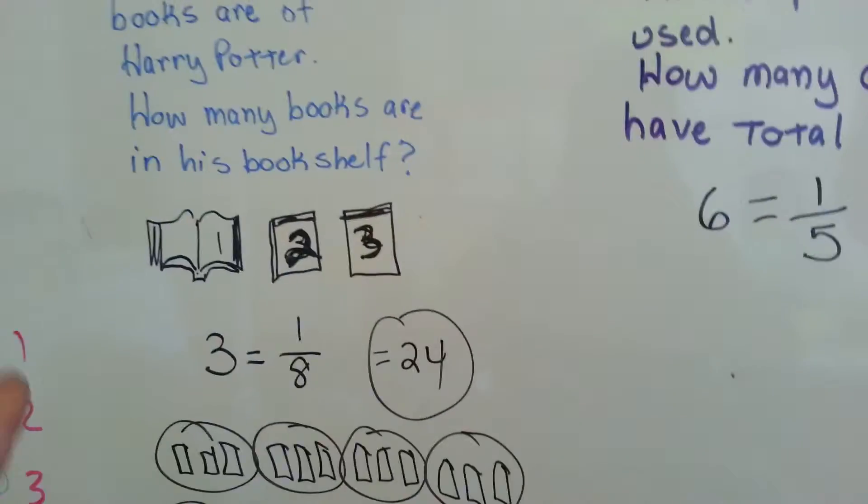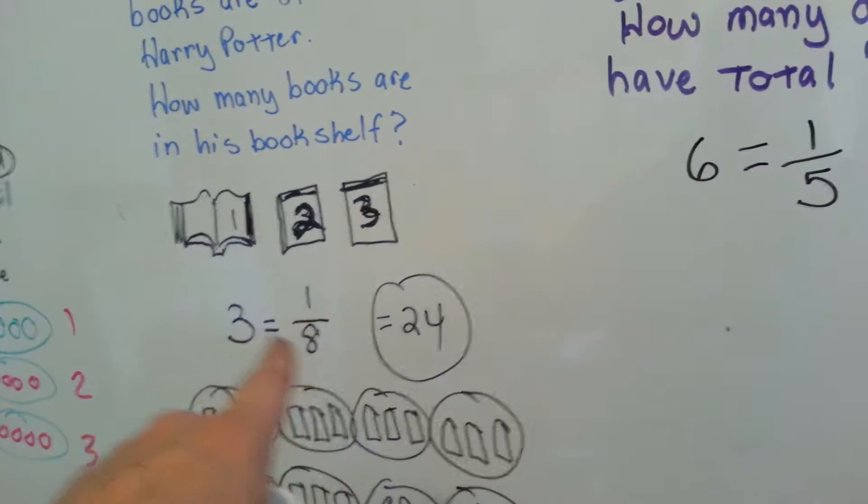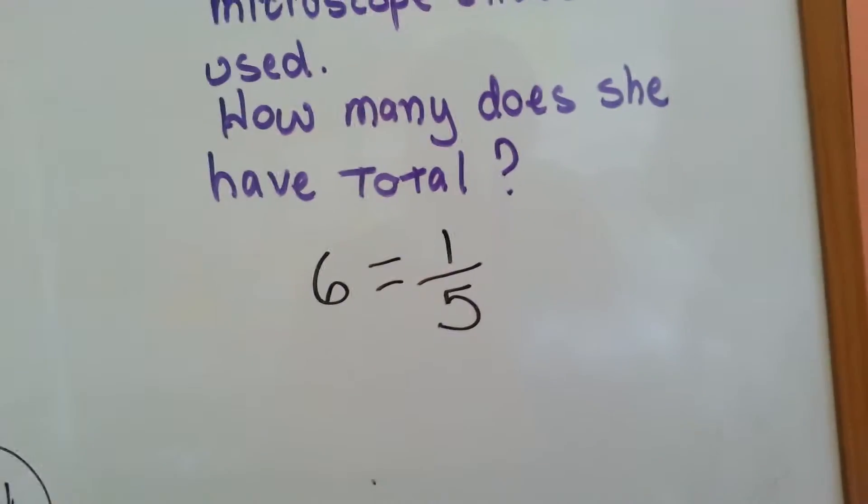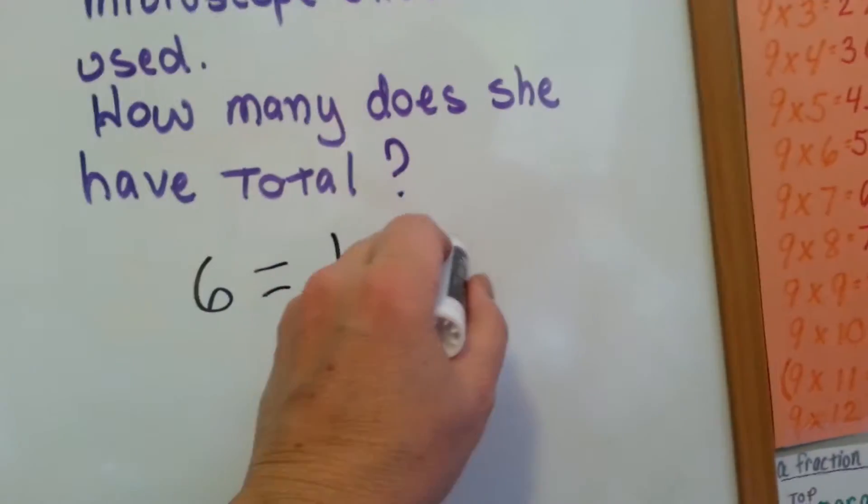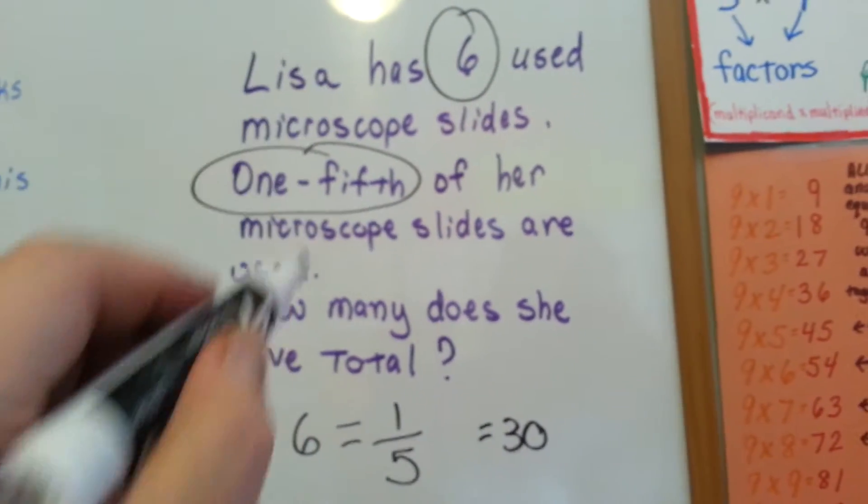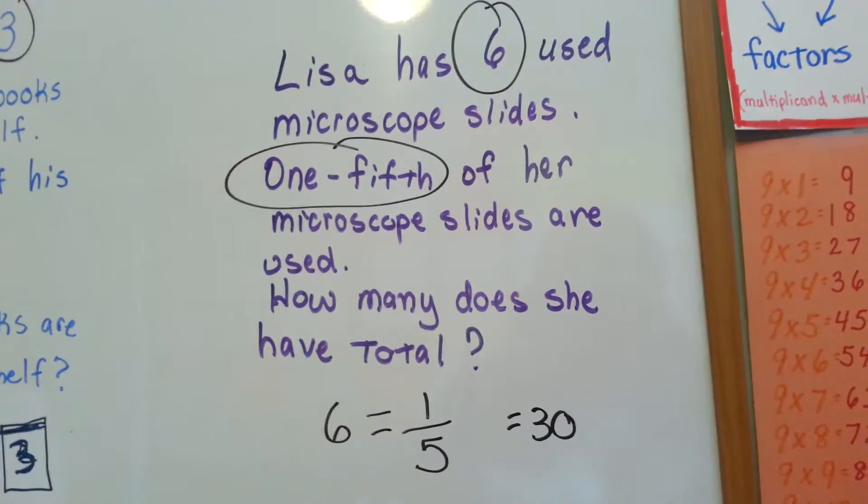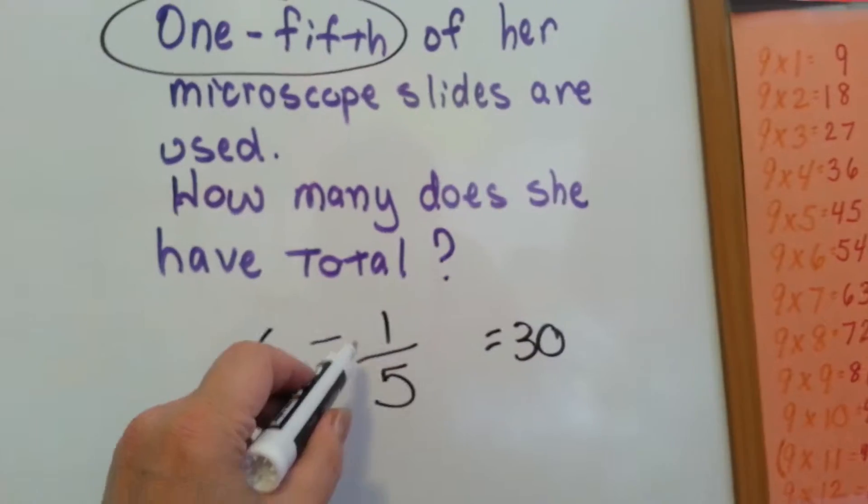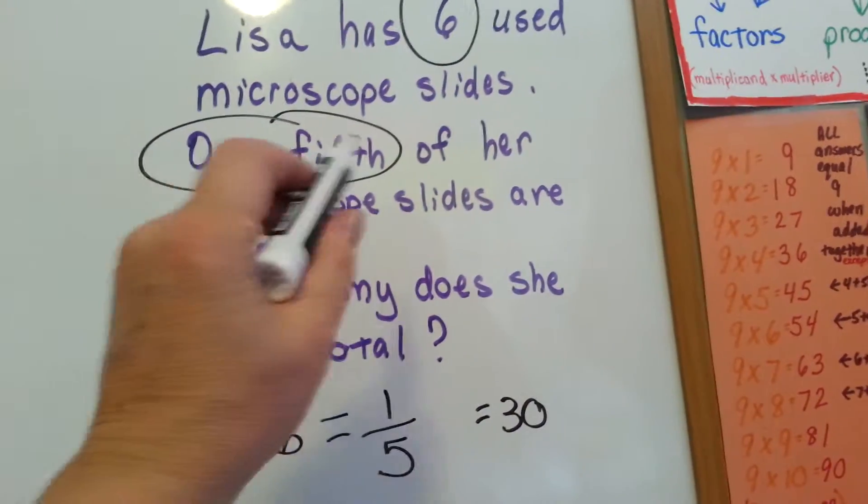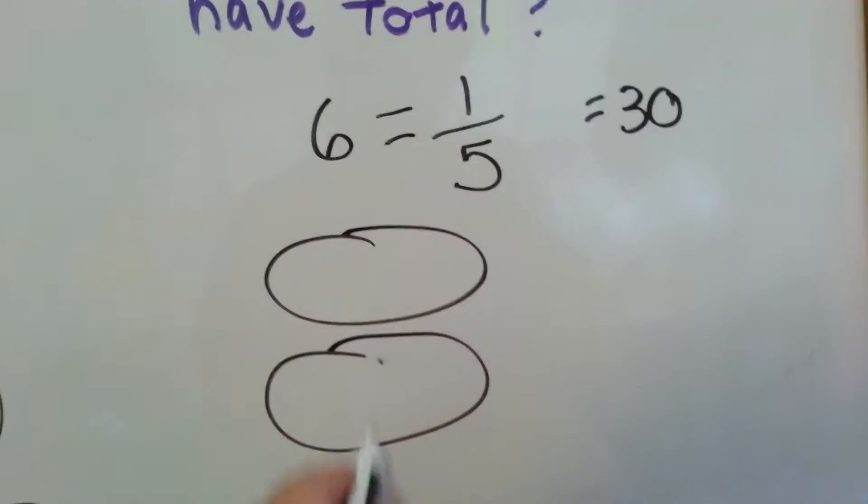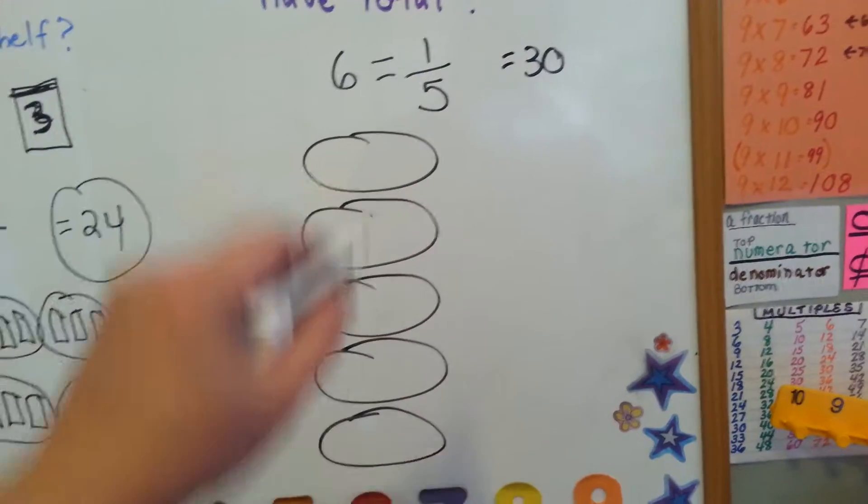Do you remember what we need to do? We need to multiply this number by the denominator. What is six times five? Six times five equals thirty. So she has thirty microscope slides. Now let's draw a picture and see if this works. So one-fifth says that we need five groups. One group, two group, three group, four group, five group. Here's our five groups.